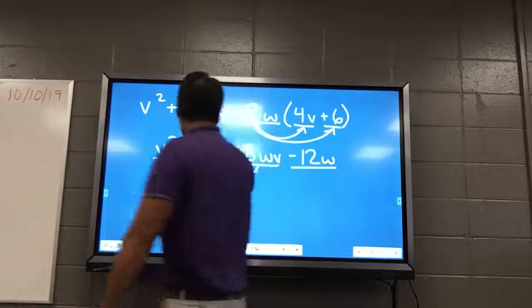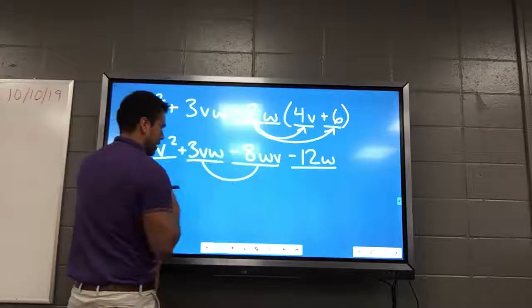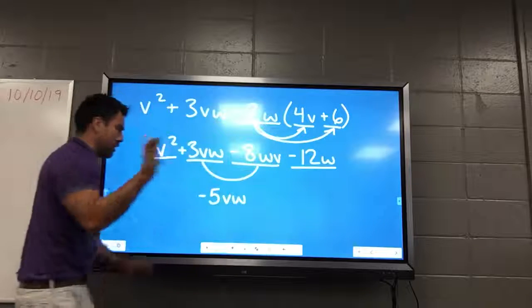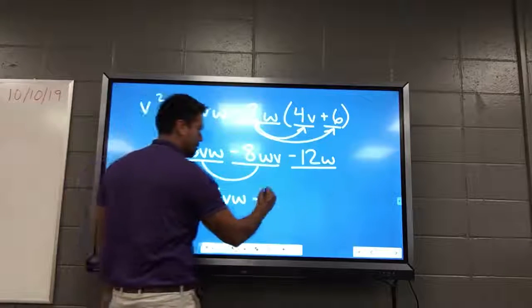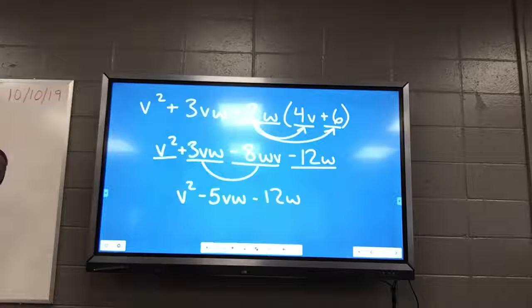And then what's 3? Plus negative 8. Which is the same thing as 3 minus 8. Negative 5. Negative 5. And you can write vw or wv. Doesn't matter. And don't forget, v squared didn't just disappear. And neither did 12w. Oh, right. We've got three now. Terms.